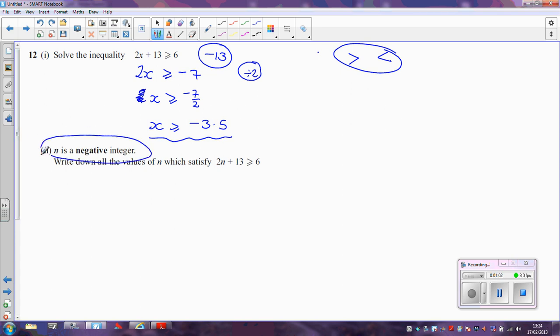Question now says n is a negative integer, so it's a negative whole number, and it satisfies the same inequality. So x in this case—I'm going to use n though—n must be greater than or equal to minus 3.5.